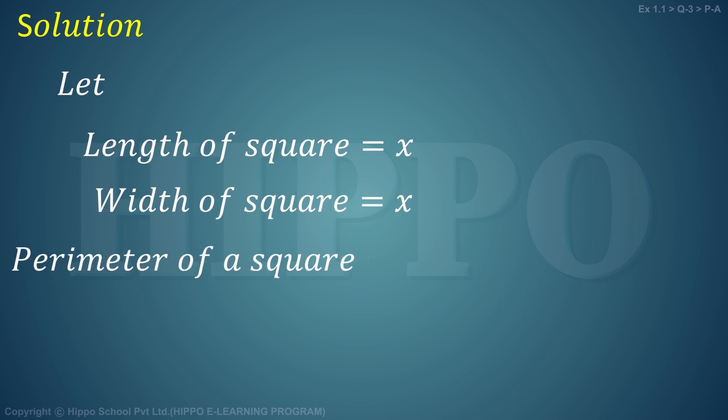Now, perimeter of a square p - we know that in the perimeter we have to sum up the sides of the square. A square has four sides: x+x+x+x, so p equals 4x. This is our equation number one.